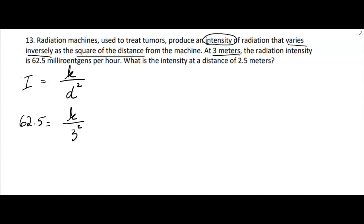That would be the distance, K over 3 squared. I've got the square of the 3. The radiation intensity is 62.5 milliröntgens per hour. That's the intensity. So we're going to figure out K now. So you have 62.5 equals K over 9.